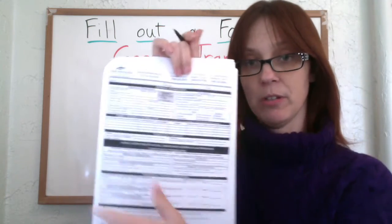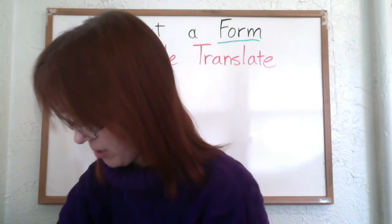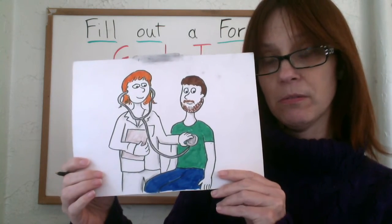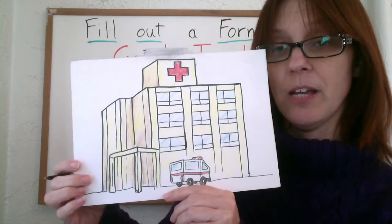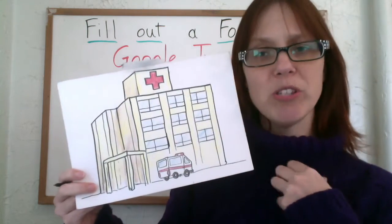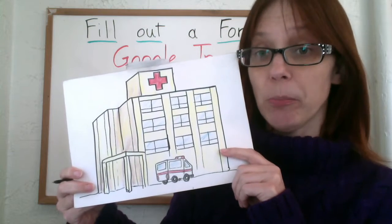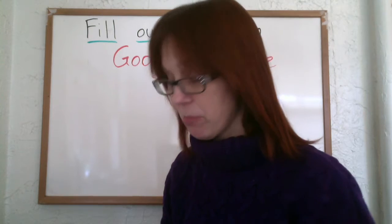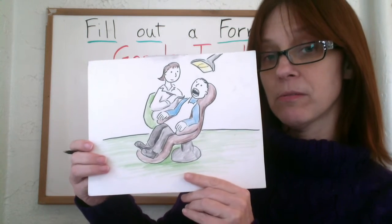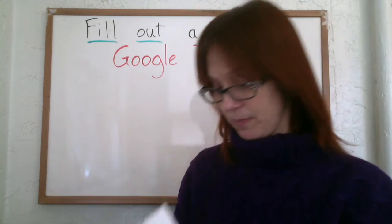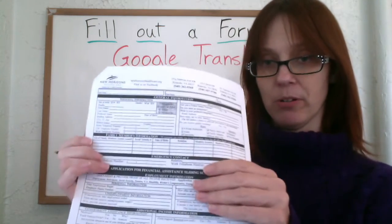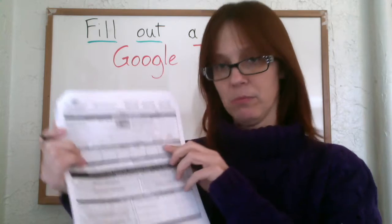To fill out a form is to write on a paper. A form is a paper that you get sometimes when you go to see a doctor, or the hospital, and they want your information — your first name, last name, phone number. Or sometimes you go to a dentist and they want your first name, last name, date of birth. They give you a paper and say: fill out the form.